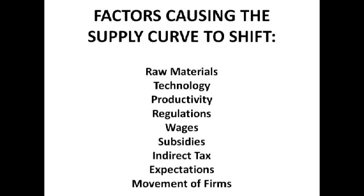Moving on to technology — by which we mean capital, the machinery used by firms to make products. If technology gets better and increases in quality, it means there is increased capital productivity, which means machines produce more in the same period of time, which means costs fall for firms, so more firms are able to enter the market, supply increases, and there's a right shift of the supply curve.